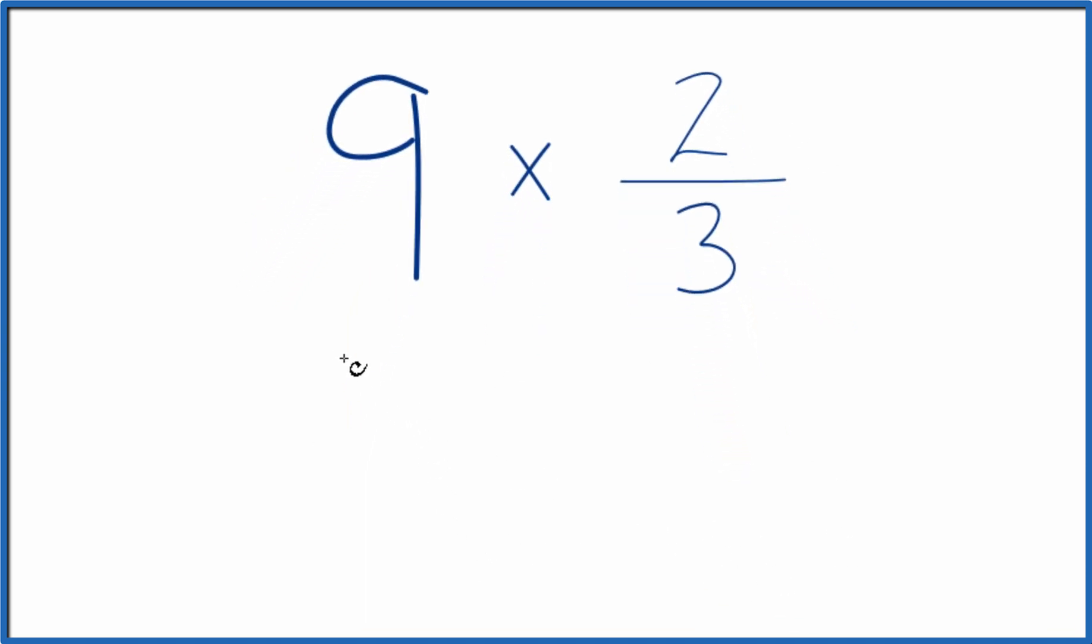It might be easier, though, to say 9 and call this 9 over 1. It's still 9. We're just dividing by 1. But now we have a fraction,